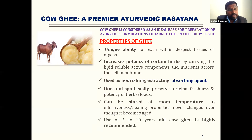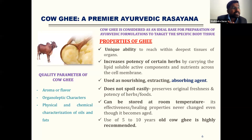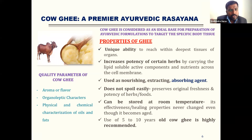Use of five to ten years old cow ghee is highly recommended, provided it is stored with proper storage conditions by checking all parameters. Quality parameters of cow ghee include aroma, flavor, and organoleptic characters, which determine palatability of the product. Physical and chemical evaluation gives an idea of formulation stability and shelf life.